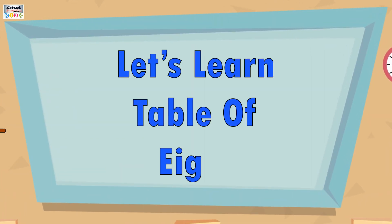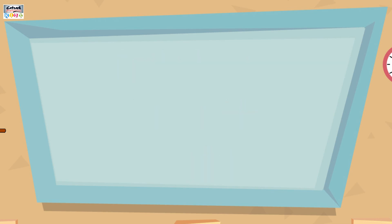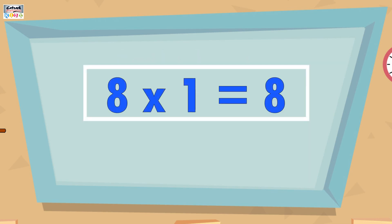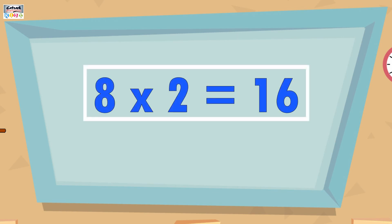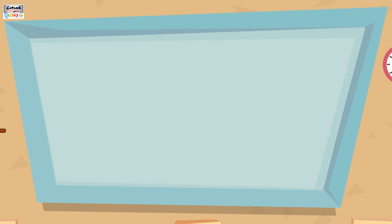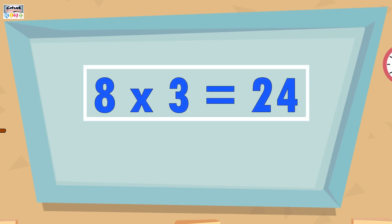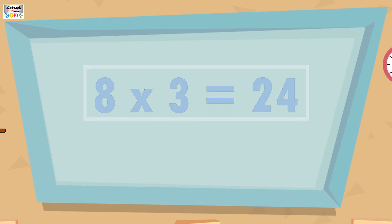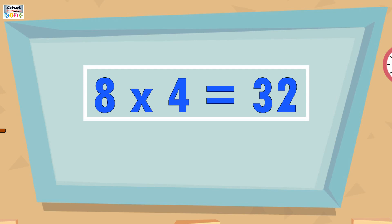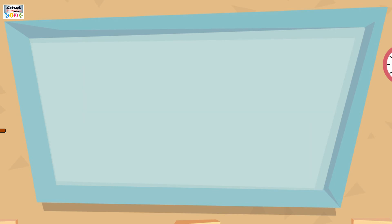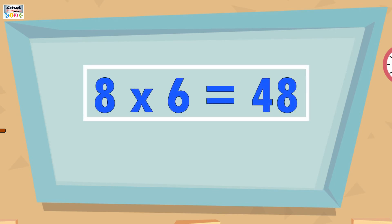Let's learn the table of 8. 8 ones are 8, 8 twos are 16, 8 threes are 24, 8 fours are 32, 8 fives are 40, 8 sixes are 48.